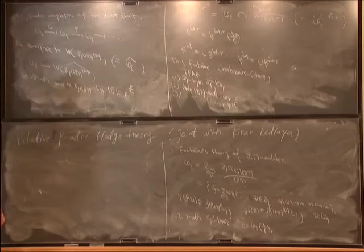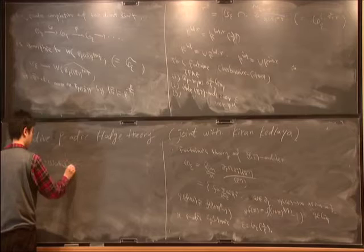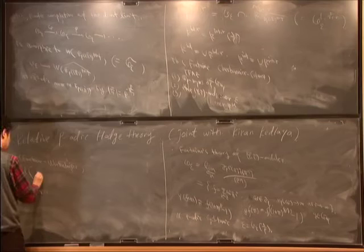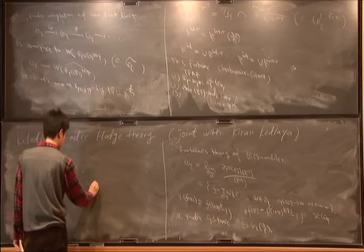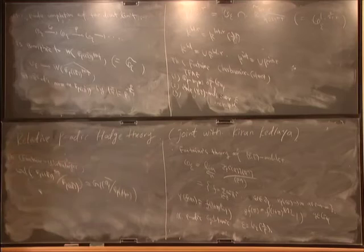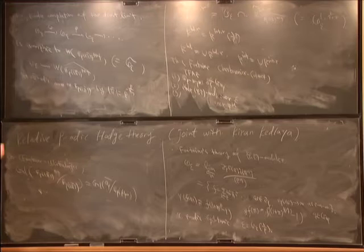The starting point of the proof is the Fontaine-Wintenberger theorem, which states there is an isomorphism of Galois groups: the absolute Galois group of FP double bracket pi-bar is isomorphic to the Galois group of QP-bar over QP adjoined all P-power roots of unity. The amazing point of the theorem is that the left-hand side is a Galois group of a characteristic P object and the right-hand side is the Galois group of a characteristic zero object.